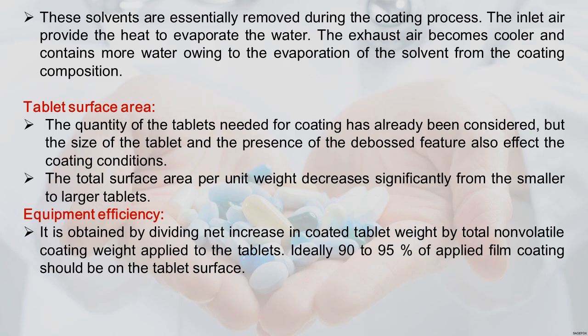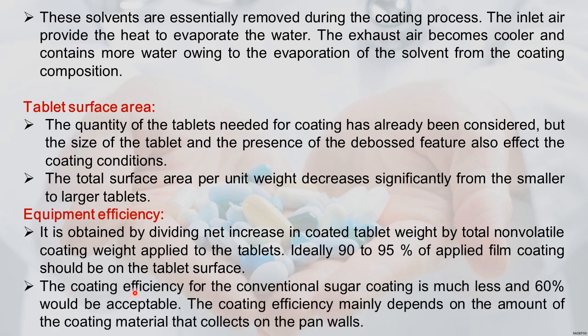Equipment efficiency or coating efficiency is obtained by dividing the net increase in coated tablet weight by the total non-volatile coating weight applied. Ideally 90 to 95 percent of applied film coating should be on the tablet surface. Coating efficiency for conventional sugar coating is lower — 60 percent is acceptable. Coating efficiency mainly depends on how much coating material collects on the pan wall rather than on the tablet surface.